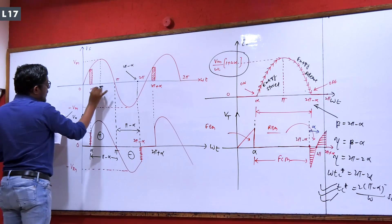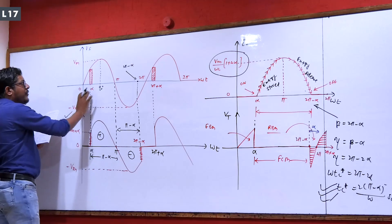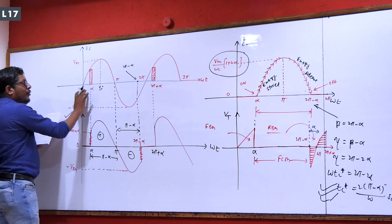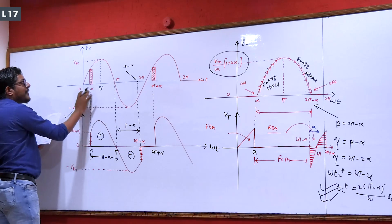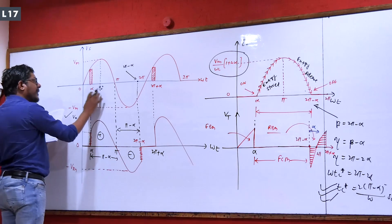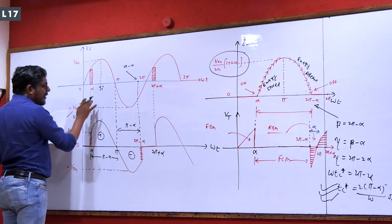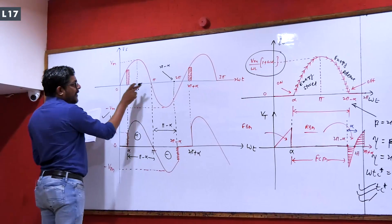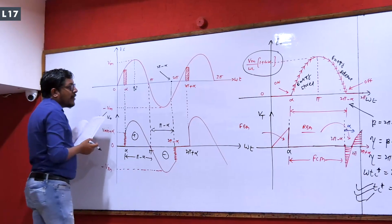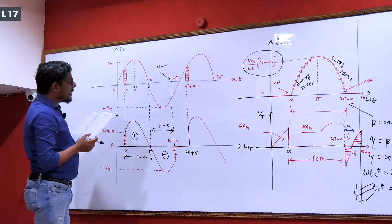Normally, alpha can range from zero to 180 degrees. Alpha can be less than 90, equal to 90, or greater than 90. In this figure, alpha is more than 90 — the value given is 120 degrees.